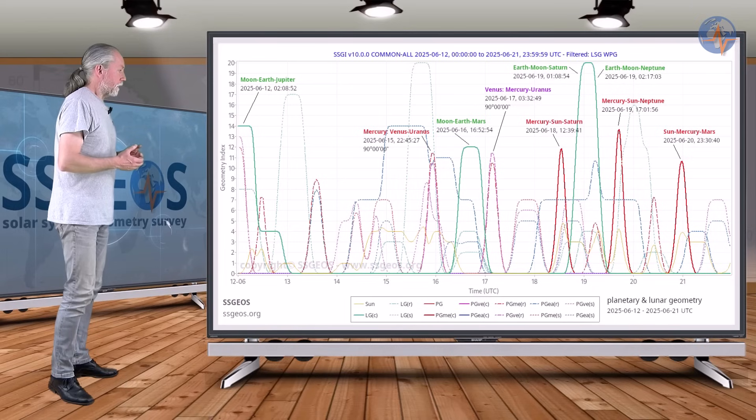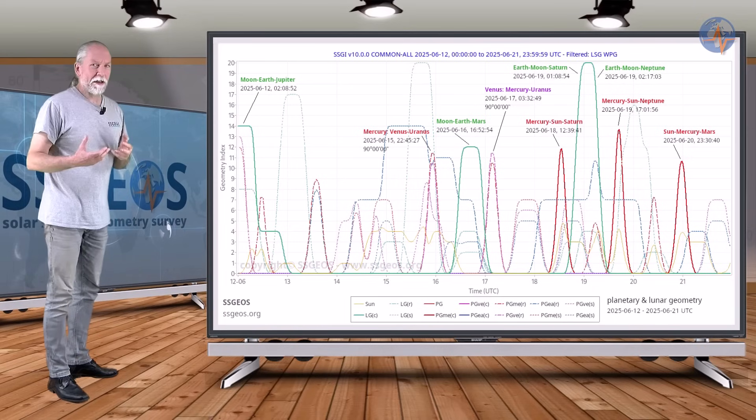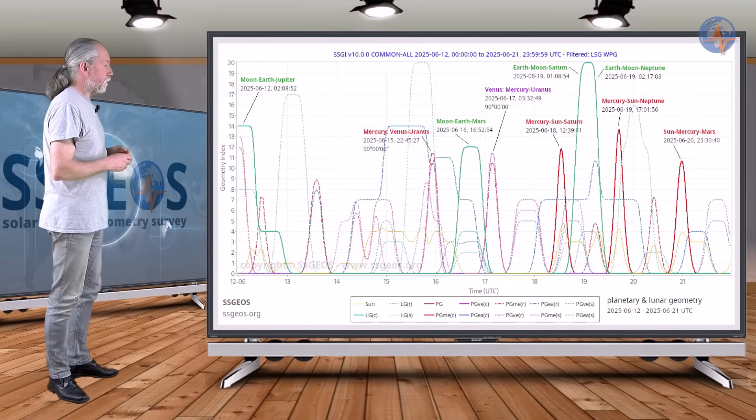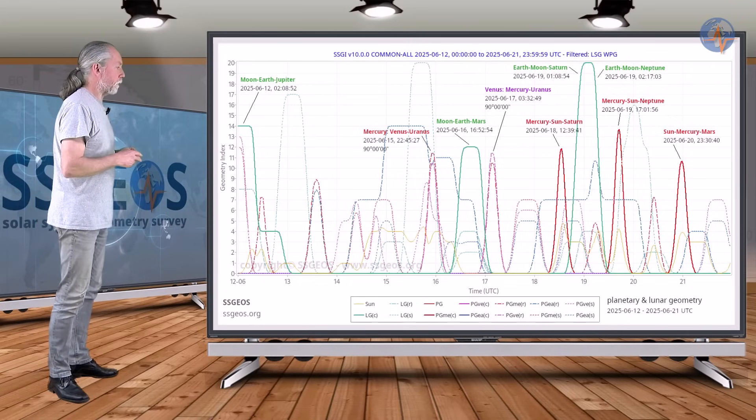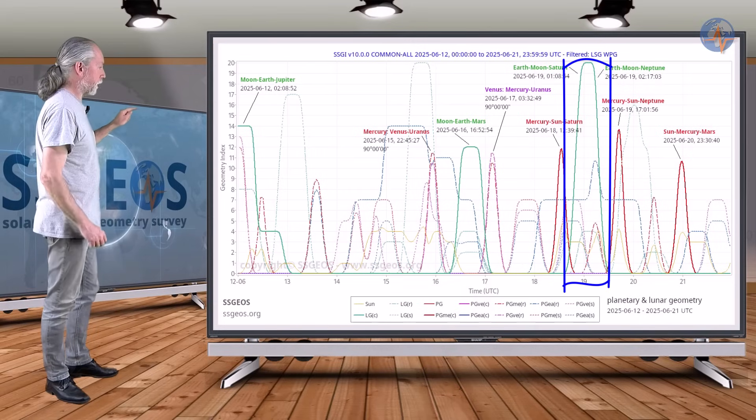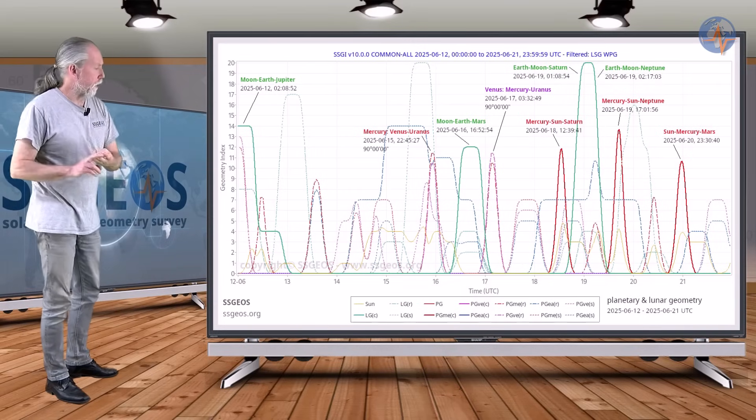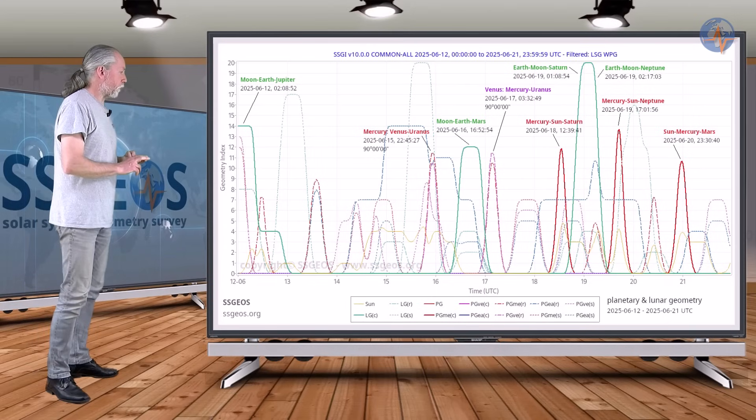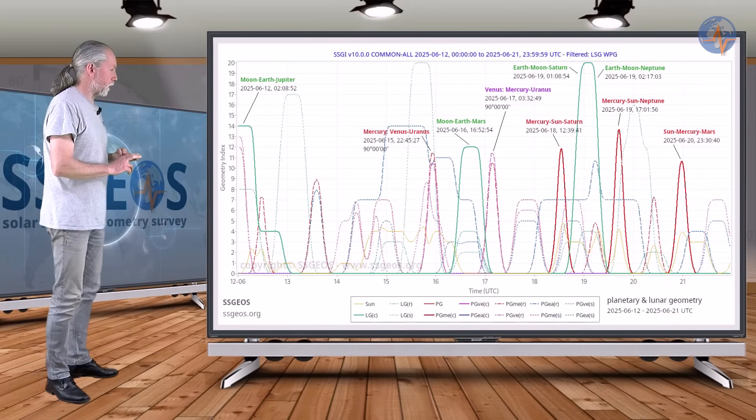If you take into account two days, that would be around the 19th. Then we have also a high lunar peak with Saturn and Neptune. We have three planetary conjunctions with Mercury coming up on the 18th, on the 19th, and later on the 20th.